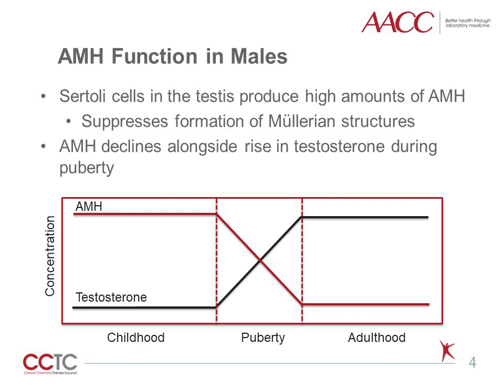Anti-mullerian hormone inhibits the formation of mullerian structures in men. During male uterine development, Sertoli cells in the testes produce high amounts of AMH. The resulting elevated concentrations of AMH suppress the production of mullerian structures, namely the vagina, uterus, and fallopian tubes. At the onset of puberty, as testosterone begins to climb towards adult concentrations, AMH declines in parallel, though it remains at concentrations greater, on average, than those generally observed in females.